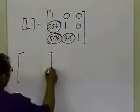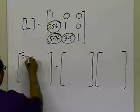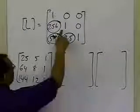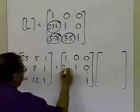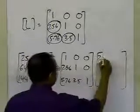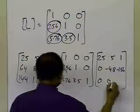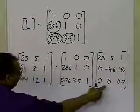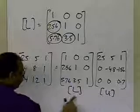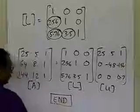So the LU decomposition is: A = [25, 5, 1; 64, 8, 1; 144, 12, 1] equals L times U, where L has ones on the diagonal, zeros above, and the multipliers [L21=2.56, L31=5.76, L32=3.5] below the diagonal, and U = [25, 5, 1; 0, −4.8, −1.56; 0, 0, 0.7]. You can verify by multiplying L times U to recover the original A matrix. And that's how you do the LU decomposition of a square matrix.